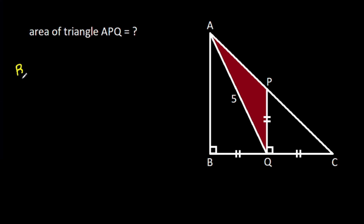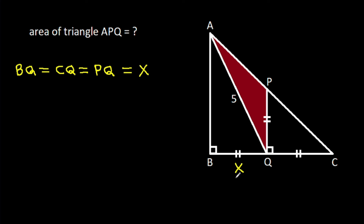We have BQ is equal to CQ is equal to PQ. Suppose X — BQ is X, CQ is X, and PQ is X.